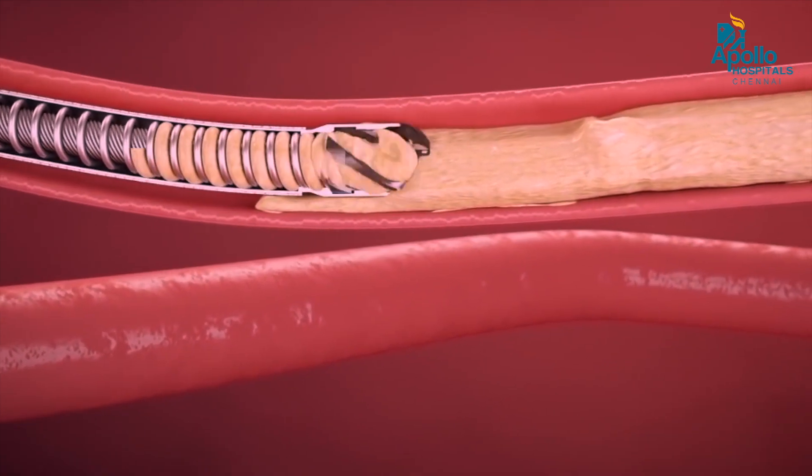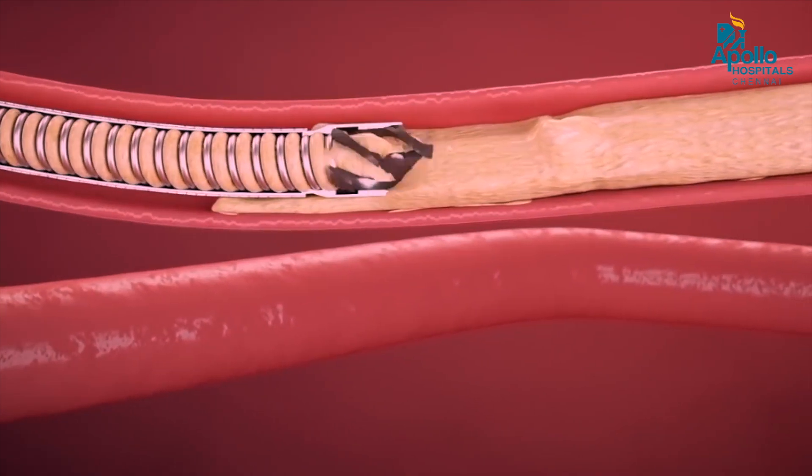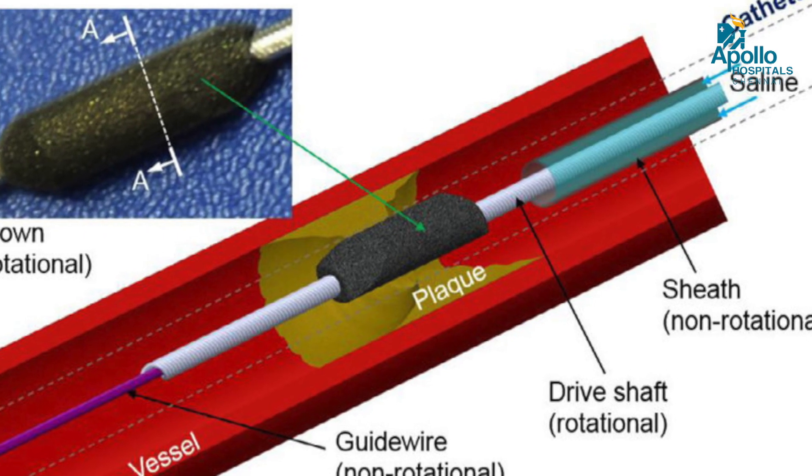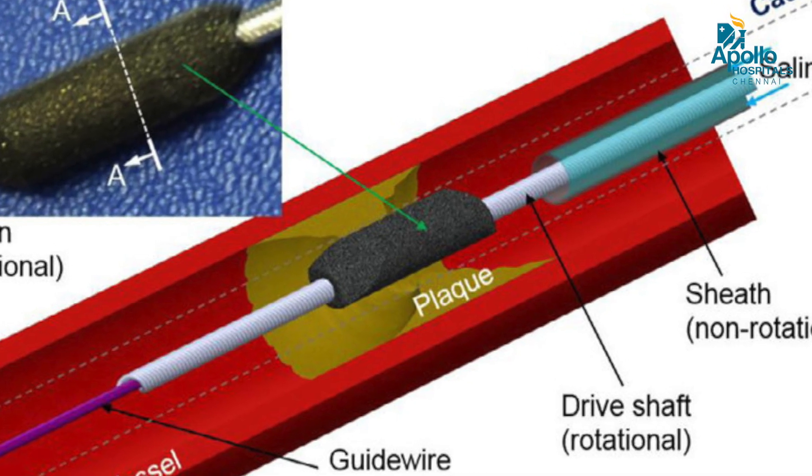There are other gadgets like atherectomy devices such as Rotablation, called the Rotablator, which is a diamond burr that shapes the calcium and helps the stent expand. There is another device called Orbital Atherectomy, which is also a diamond burr device that works in an orbital manner to shape the calcium.